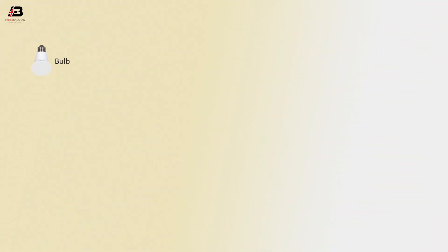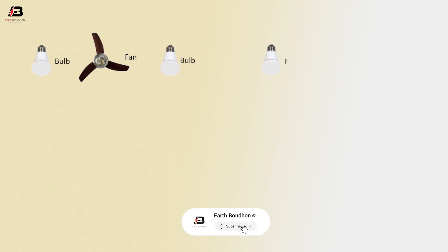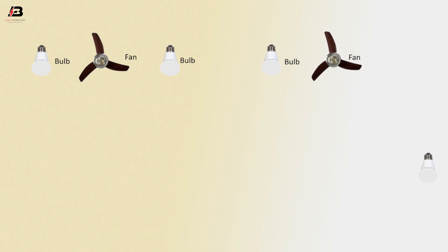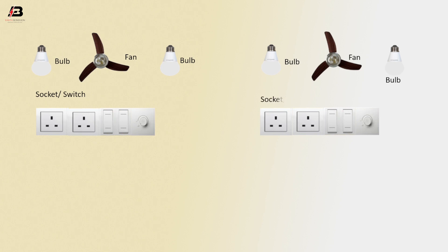Let's start. Room one has a bulb, fan, and another bulb. Room two has a bulb, fan, another bulb, socket, switches, and regulator. Room one also has socket, switches, and regulator.